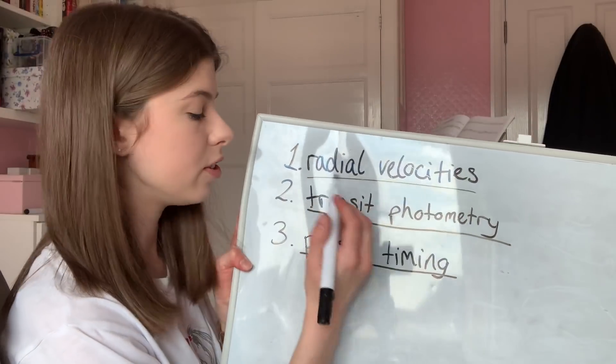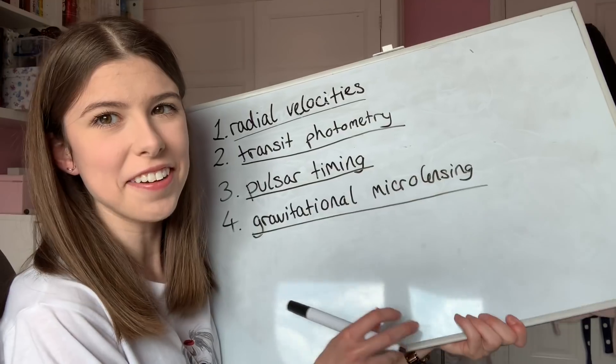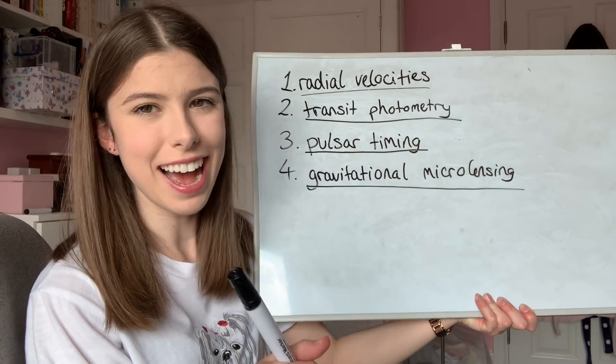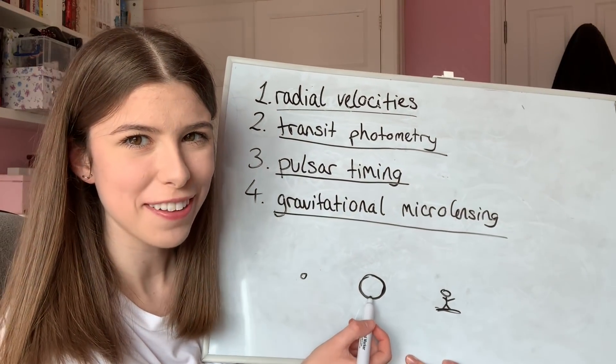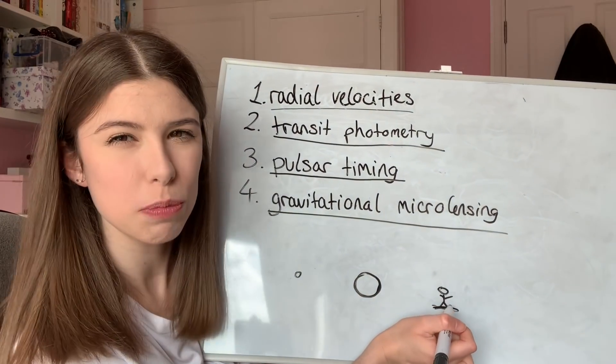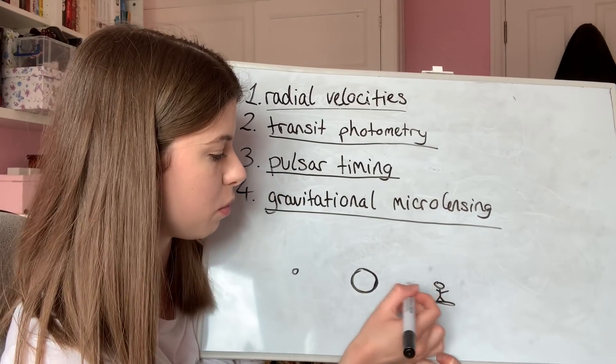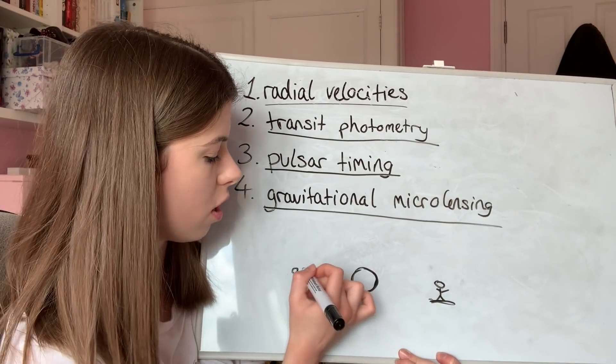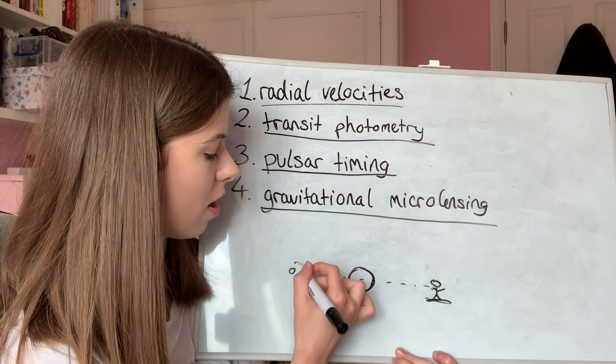The fourth method we can use to detect exoplanets is gravitational microlensing. I'm going to try to explain this as best I can, but I'm not going to go into details. Imagine we have a foreground star here, us as an observer on the Earth, and the background star here. We have alignment between the foreground star and the background star along our line of sight.